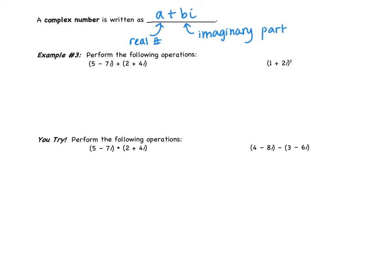We're going to work on performing some operations with complex numbers. If you look at example 3, we have a complex number being added to another complex number. You're going to add the like parts. So real, real can be added to get 7. Imaginary, imaginary can be added. So negative 7 plus 4 is negative 3i.